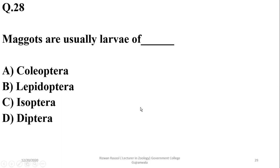Question 28: Maggots are the larvae of the order Diptera (flies). Coleoptera larvae are grubs, and Lepidoptera larvae are caterpillars.